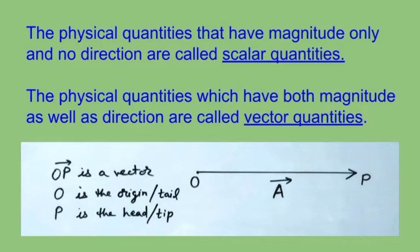The physical quantities which have both magnitude as well as direction are called vector quantities or simply vectors. Some examples are displacement, velocity, acceleration, momentum, force, torque, and gravitational field.